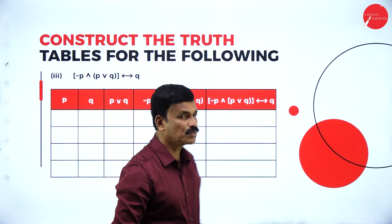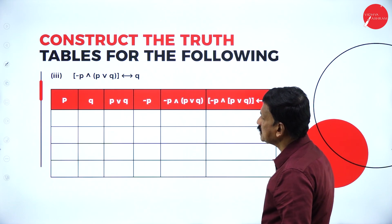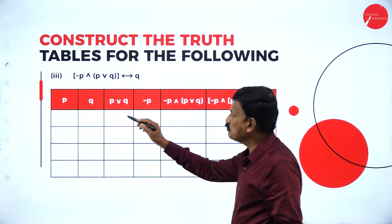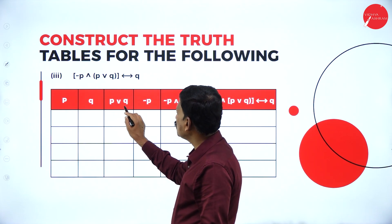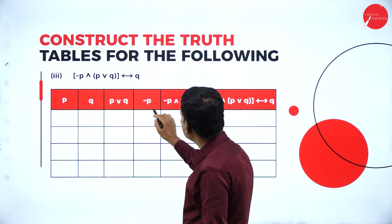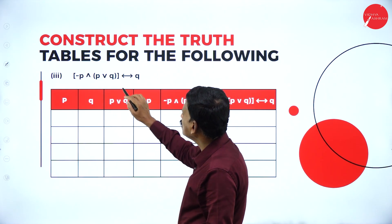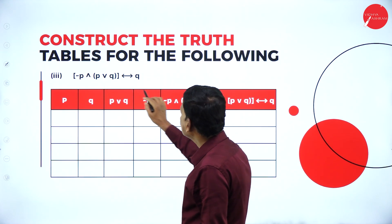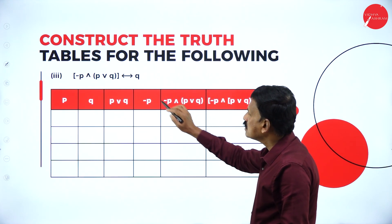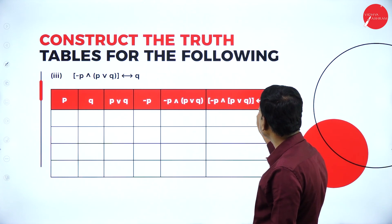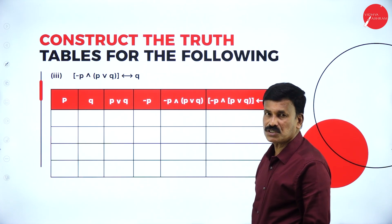Now move on to the next problem: negation P, conjunction P disjunction Q, biconditional to Q. Write down P, Q, P disjunction Q, negation P, negation P conjunction P disjunction Q, and the full expression: negation P conjunction P disjunction Q biconditional to Q.